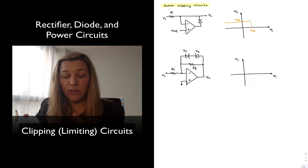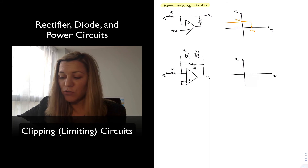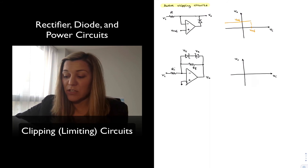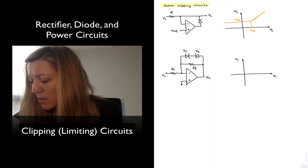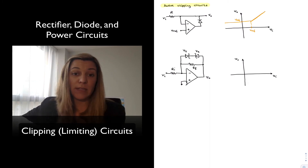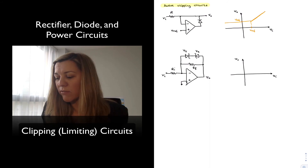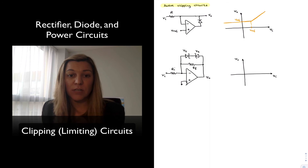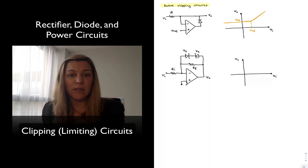When VIN exceeds the value of Vref, since VIN is applied on the negative input terminal, the op-amp tries to go towards the negative direction, so the diode becomes reverse biased. The negative feedback loop is broken, and therefore nothing dictates that the two input terminals need to be at the same voltage — VIN is simply transferred to VOUT. So for voltage levels greater than Vref, the output follows the input and it gets clipped at the Vref level. We could reverse the orientation of the diode and the opposite thing will happen.